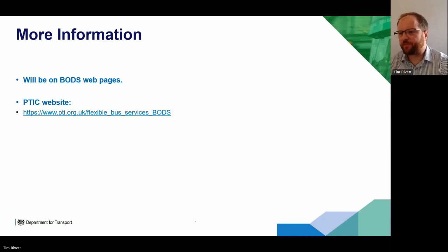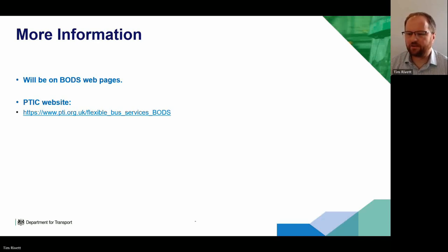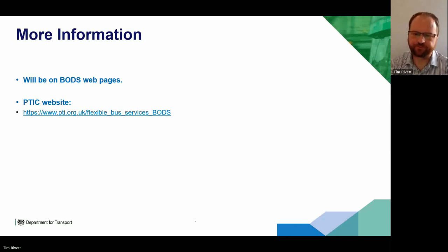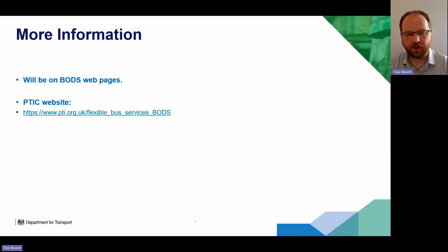Lee raises one last point: with the ethos of BODS being that data is created and used by whoever wants it, that creates a massive challenge in policing all those data users to make sure they're using it correctly — which is probably an impossible task. Shouldn't there therefore be a single gold-standard BODS journey planner, like National Rail Enquiries, where everything is rigorously checked and correctly presented, that everyone can refer to?